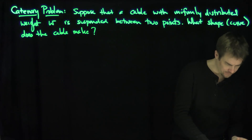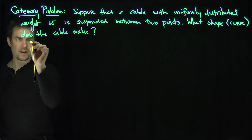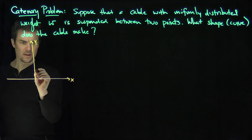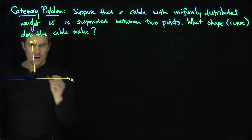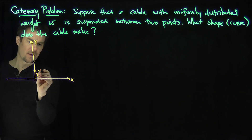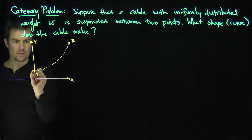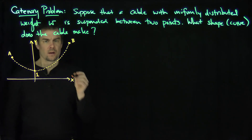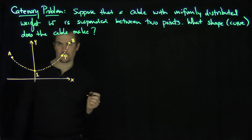The idea of the problem is the following. We're going to draw this: there's the y-axis, there is the x-axis. Let's say that this is the lowest point on the cable, because the cable naturally comes to a lowest point. I'm going to suppose that lowest point is one unit above the x-axis. The cable hangs between a point — there's endpoint B, and there's the other point A. And there's an arbitrary point P on the curve.